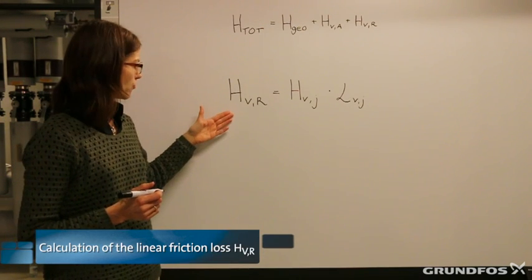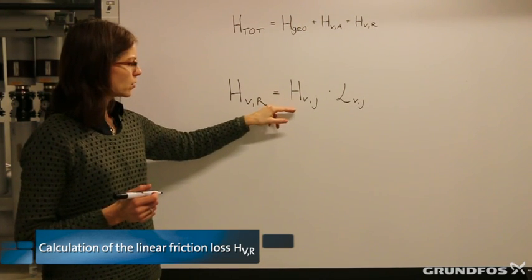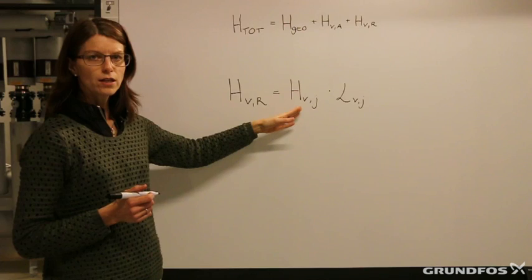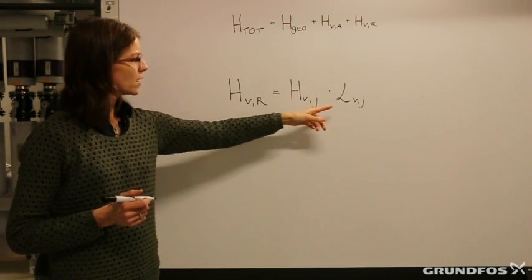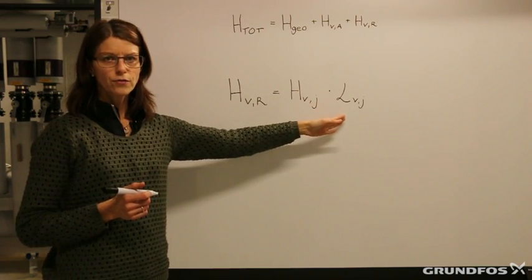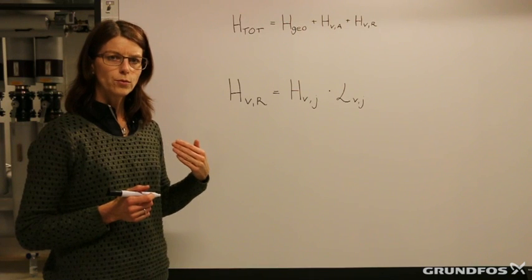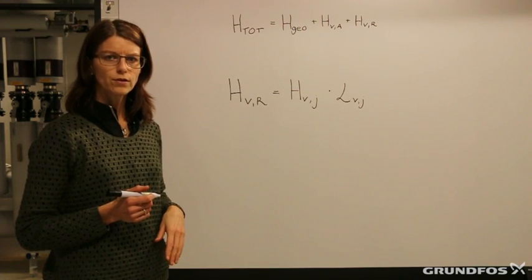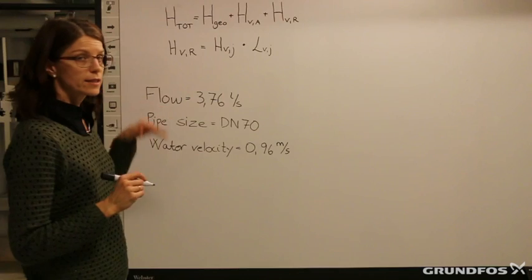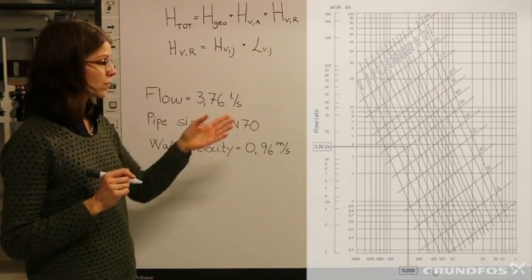Now we have the formula for the pressure loss in the linear pipe system. It's the pressure loss dependent on the flow rate — a value we can find in a chart — multiplied by the length of the pipe. It's important that we only choose the length of the upward-going pipe, because the wastewater in the downward-going pipe is moved by gravitation. For the calculation of the friction loss in the linear pipe, we need to use a diagram.